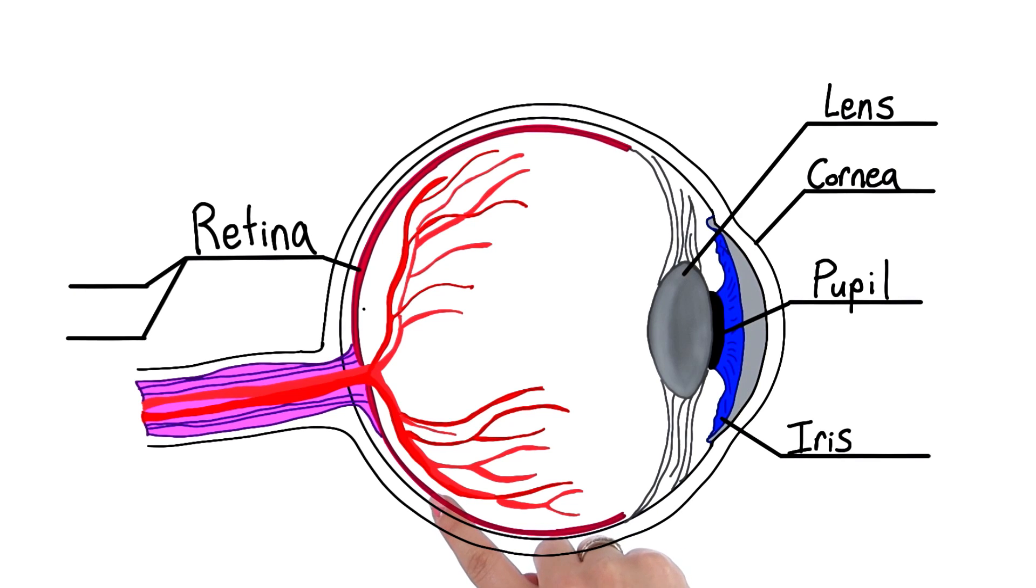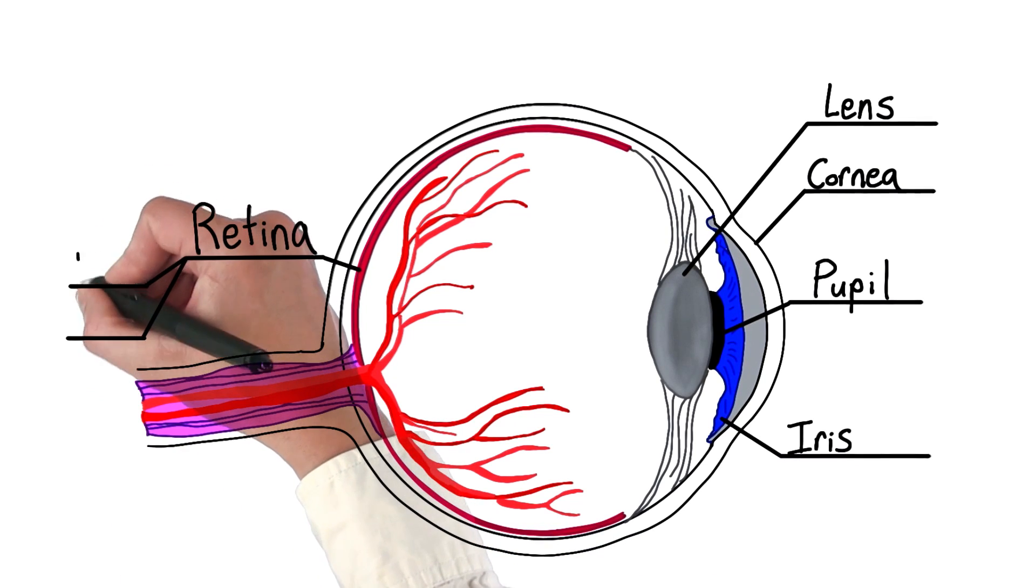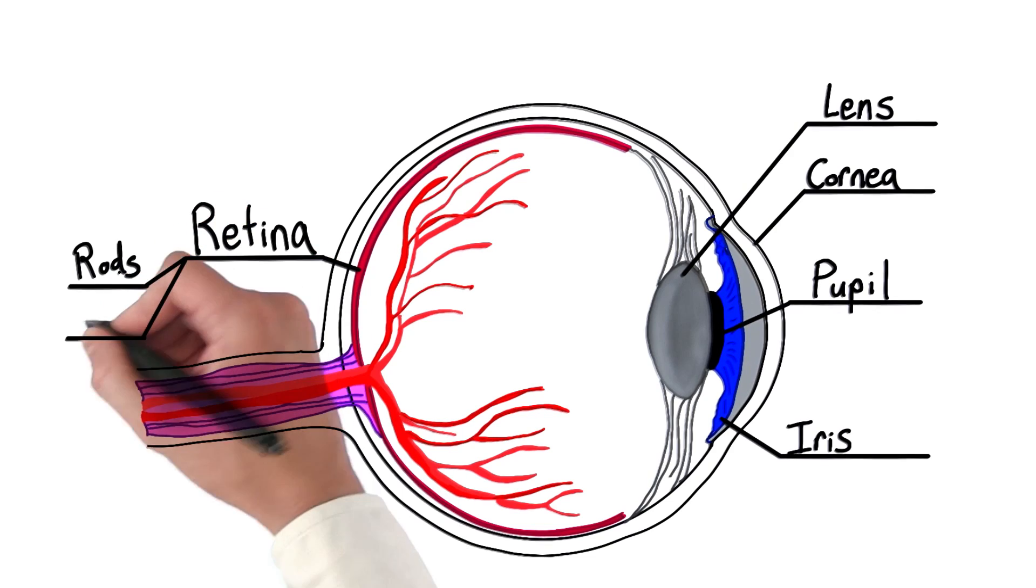And when it hits the retina, that's where our rods and cones are, right? Yeah, exactly. Those rods and cones are called photoreceptor cells.